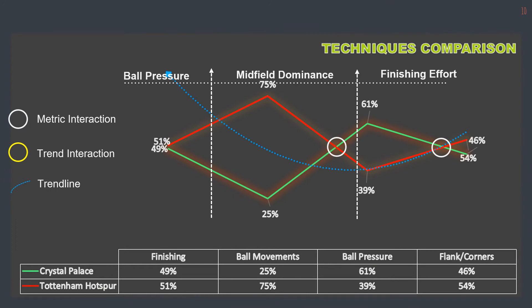We have a metric intersection in white and a trend intersection in yellow for measuring methods insights. Keep in mind that the blue trendline and yellow trend interaction can only coexist in this metric measurement if there is no other interference. Metric interaction implies that both teams would want to stamp their authority on the midfield dominance zone in order to dominate ball distribution and game rhythm.